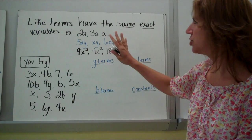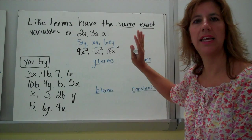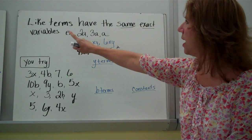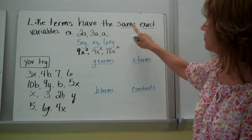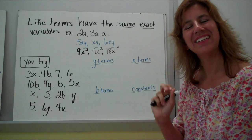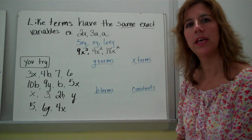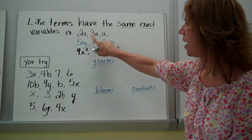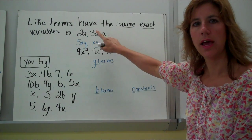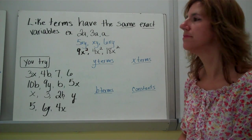Like terms. Like terms have the exact same variables — make sure you write that down. Like terms have the same exact variables, exactly the same. Here are some examples: you've got 2a, 3a, and a. They all have an 'a' so they are like terms.